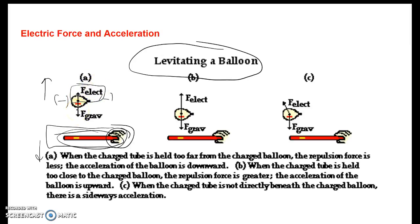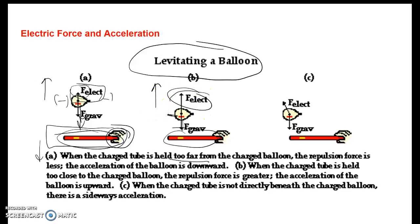We can look at a couple of different situations. In situation A, if the tube is held too far away from the charged balloon, there's less repulsion and more gravity, so the balloon falls down — acceleration is downward. As the balloon drops and gets closer to the tube, the repulsion increases and the upward force grows, so in situation B the acceleration is upward.